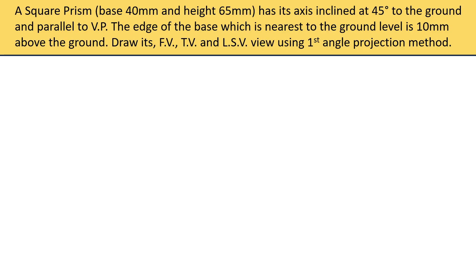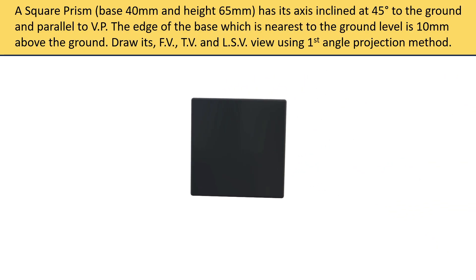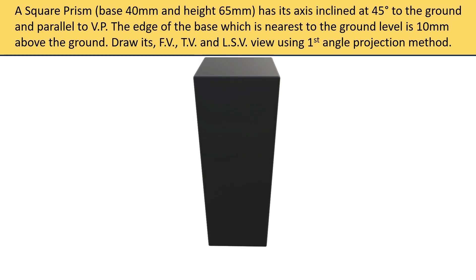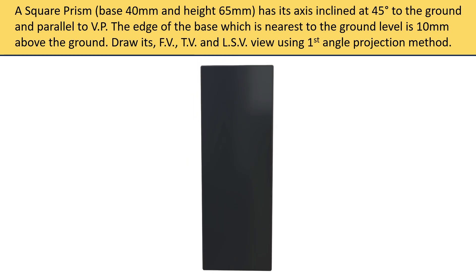To visualize this question, we need a 3D object. Here is a 3D object of a square prism. If you see from the top, you will see only a square. But if you see from the side, you will see a rectangle. This rectangle has the breadth as 40 mm and the length as 65 mm. You will see this from the side.